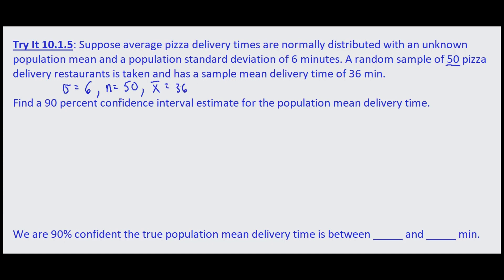At 90 percent confidence interval we're looking for an error bound, which equals the z-score times the population standard deviation divided by the square root of the sample size.